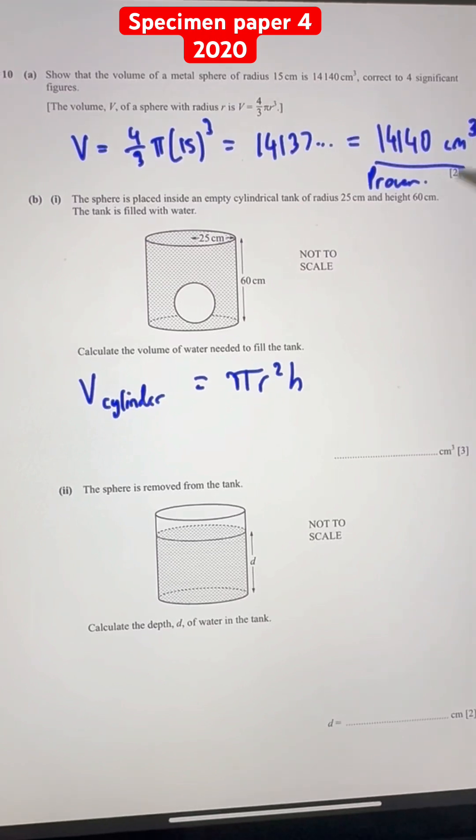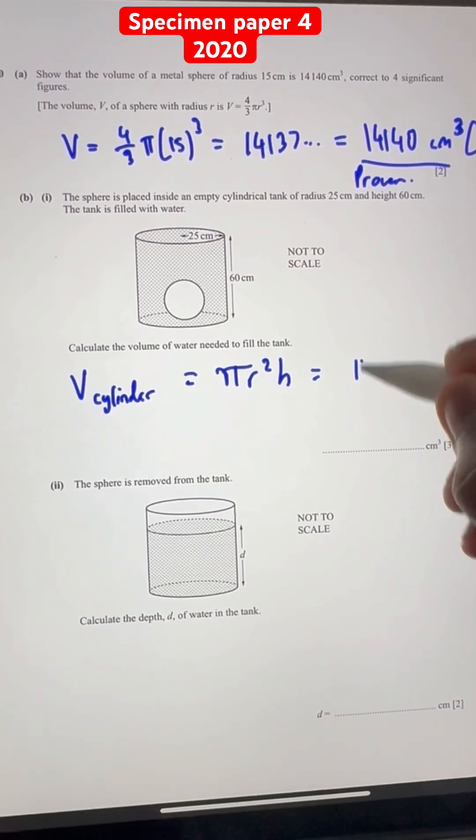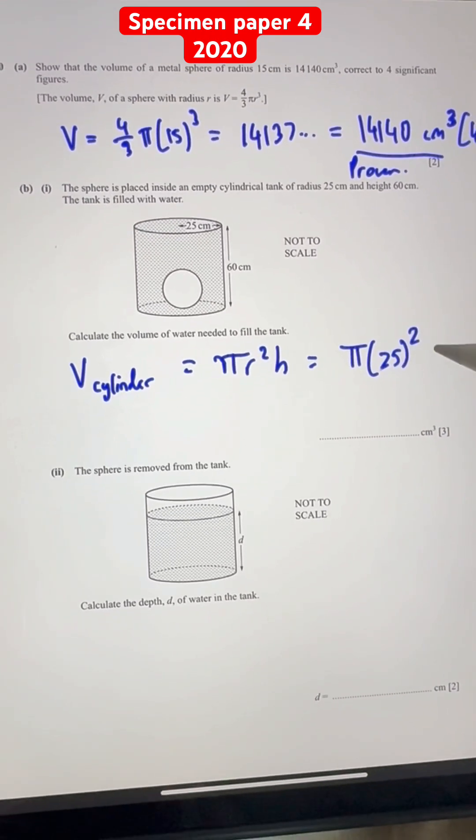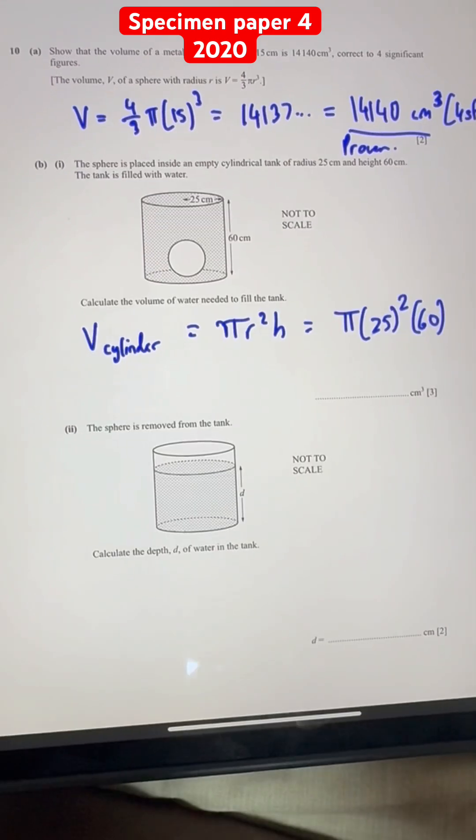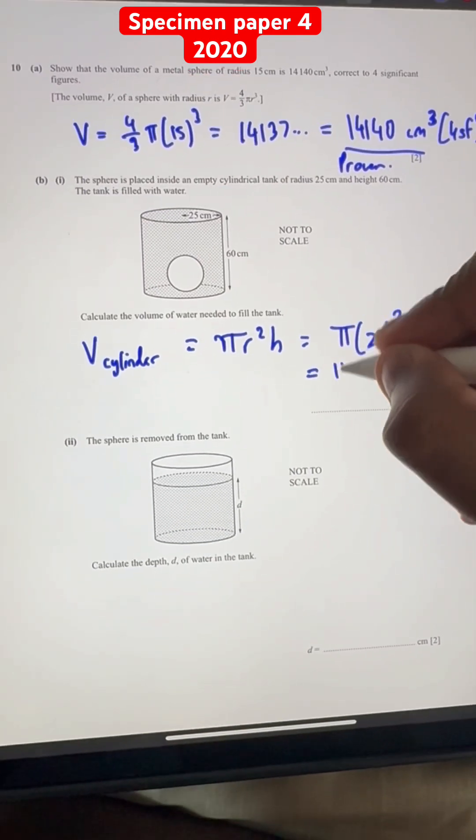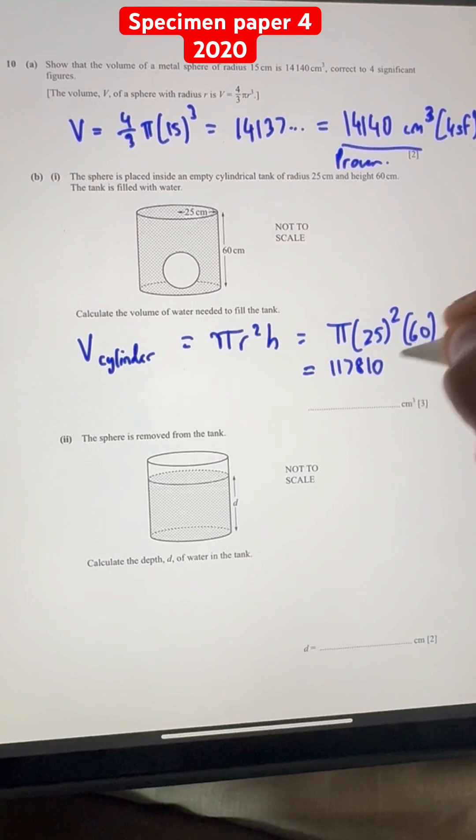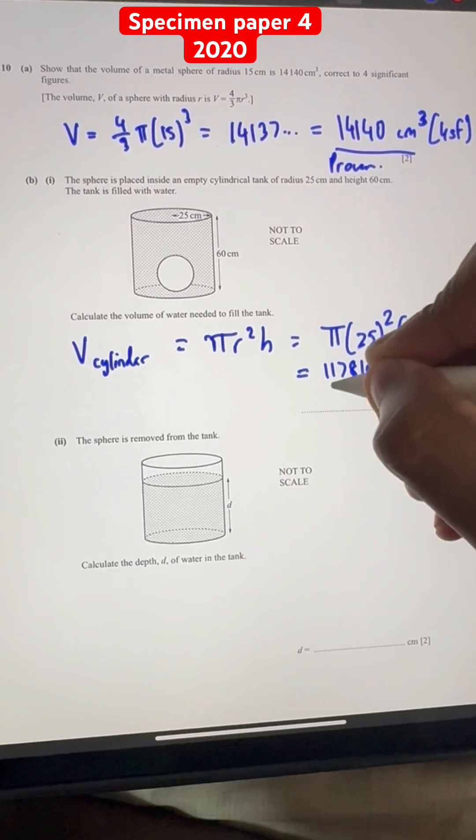So r is the radius, h is the height. We can substitute that π times 25² times 60. So if you calculate this properly, you get 117810 cm³ to the nearest whole number.